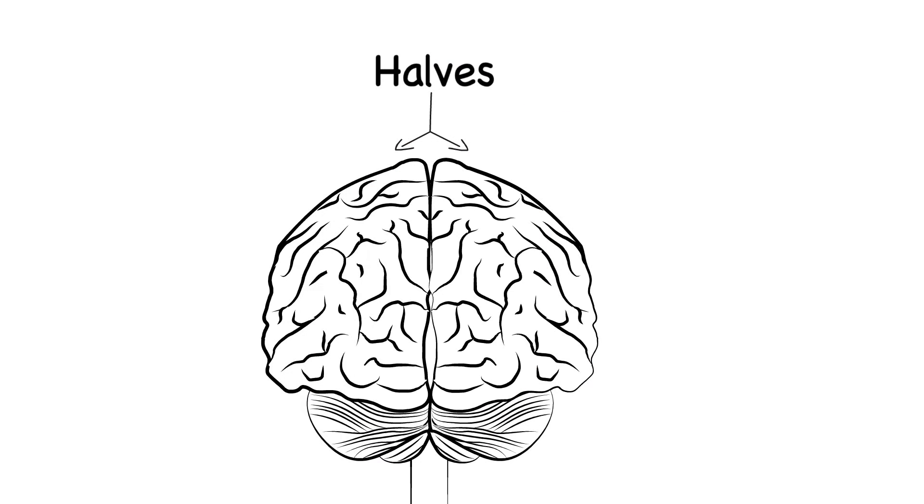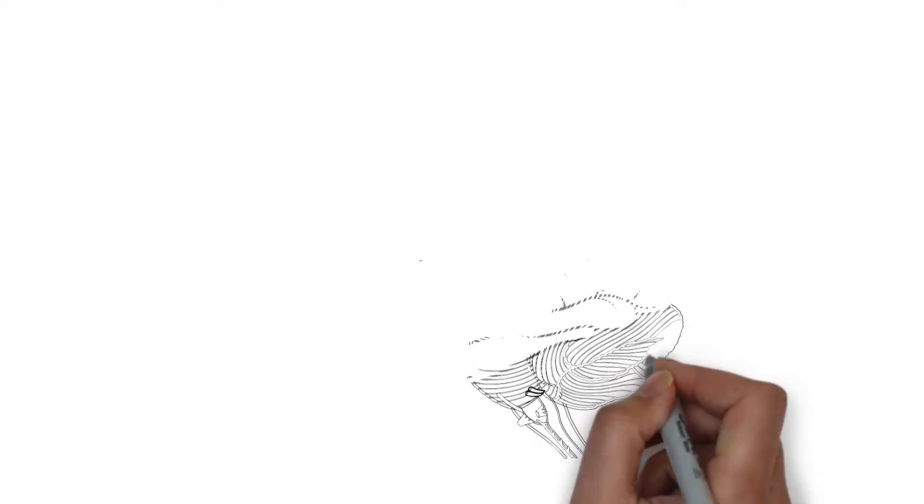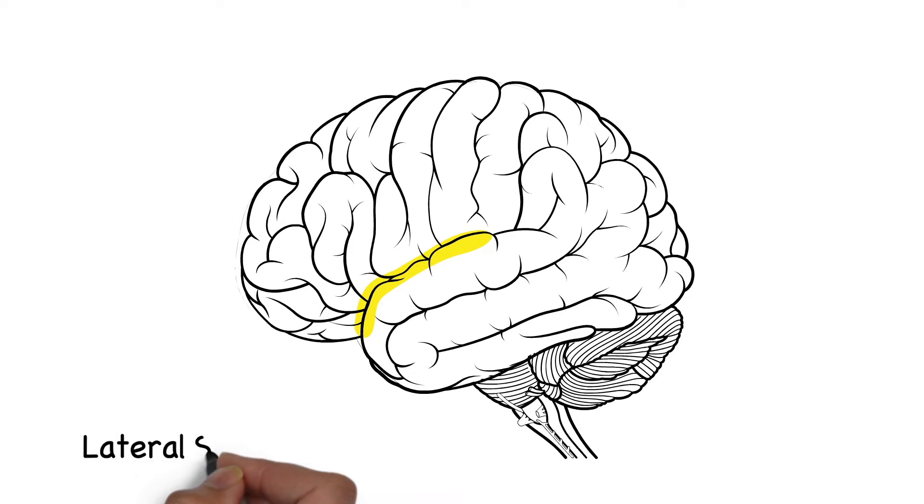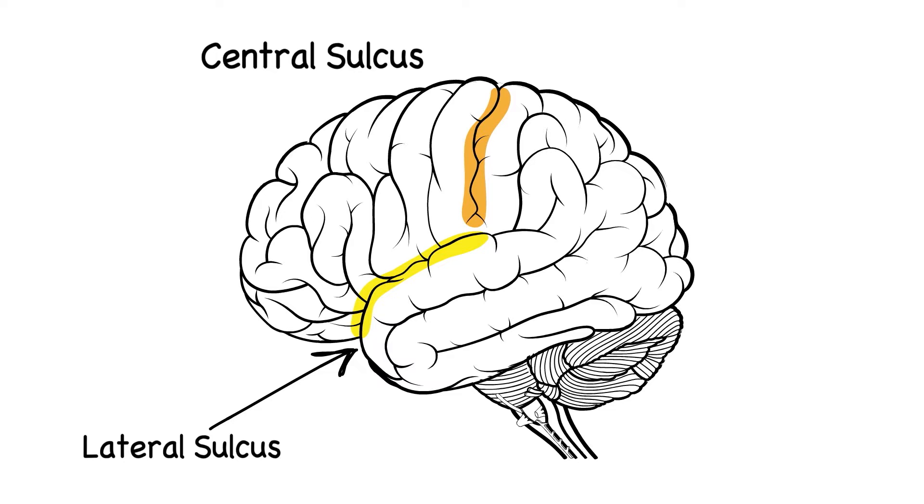The folds are mostly only subtly different between one brain and another and some of them are pretty consistent. Of note is this deep groove known as the lateral sulcus or sulci in plural. Another groove here is known as the central sulcus.